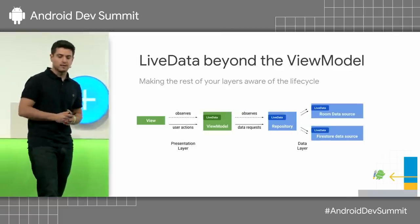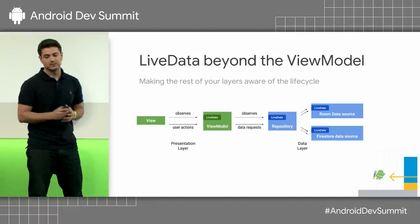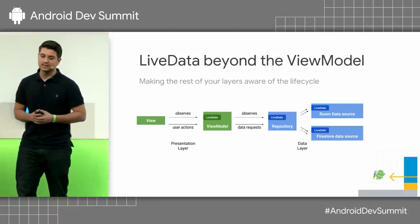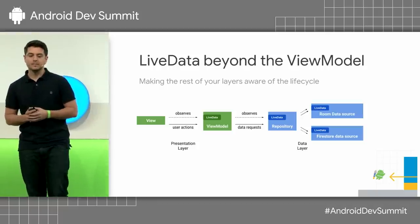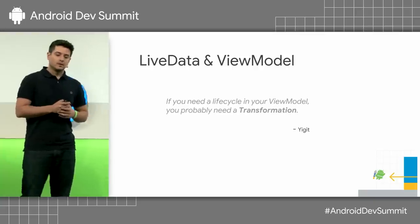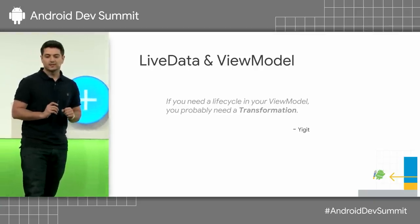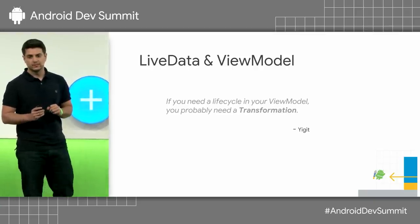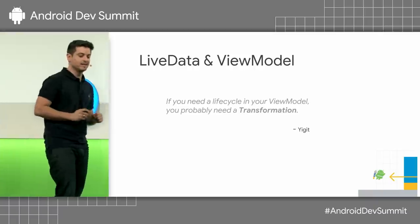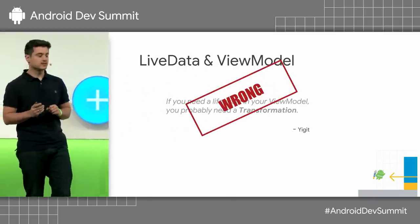What if the app is even more complicated and the repository is also observing data sources? Well, it was once said to me that if you need a lifecycle in your ViewModel, what you really want is probably a transformation — but that's actually wrong. What I say is that you definitely need a transformation. Don't ever use a lifecycle in your ViewModel.